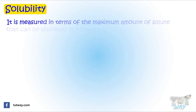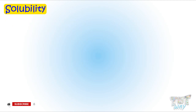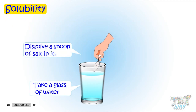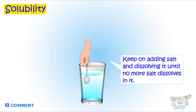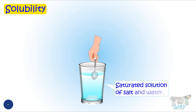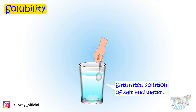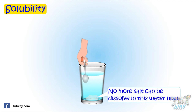Solubility is measured in terms of the maximum amount of solute that can be dissolved in a solvent at equilibrium. Now let's learn what a saturated solution is. Take a glass of water and dissolve a spoon of salt in it — it dissolves completely. Keep adding salt until no more salt dissolves. The resulting solution is a saturated solution of salt and water; that is, no more salt can be dissolved in this water now.